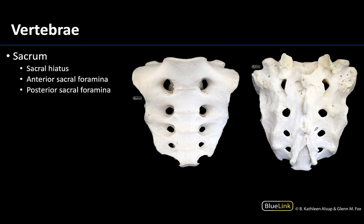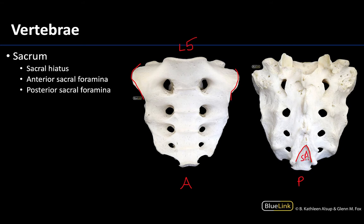Moving to the immovable vertebrae, we reach the sacrum. The sacrum articulates with L5 and with the hip bones at the sacroiliac joints. Looking at an anterior and a posterior view, the posterior view looks more complex. There are very small remnants of spinous processes, and at about S4 or S5 you will see an absence of the lamina and spinous process entirely — that region is referred to as the sacral hiatus. The sacral hiatus leads into the sacral canal, where nervous tissue passes through, as an extension of the vertebral canal.